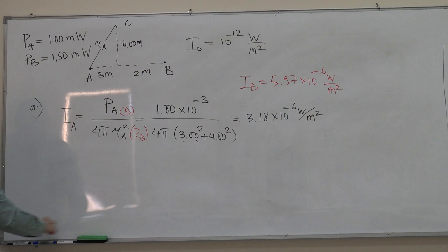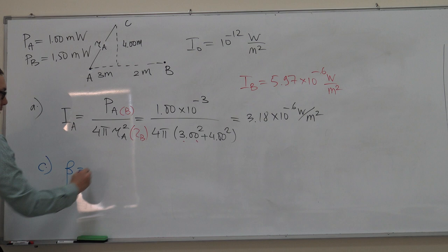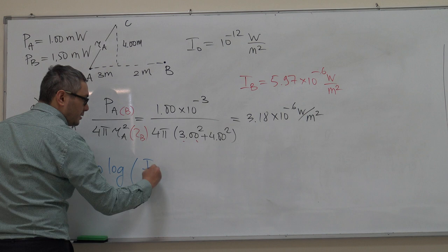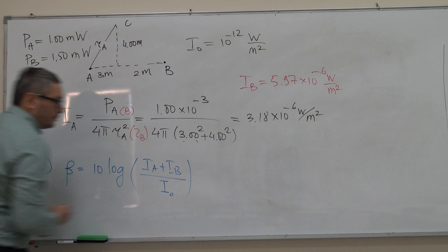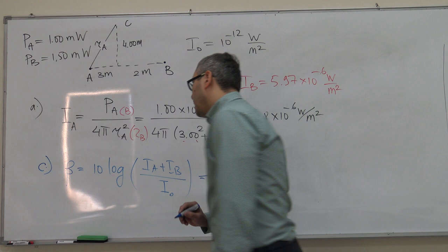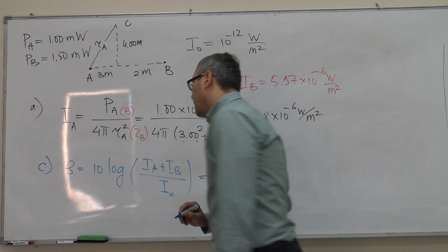For part C, loudness beta would be equal to 10 times log of the sum of the two intensities divided by I_0. Instead of adding the powers, we are adding the intensities. You can't add the powers. So this is then equal to 69.6 decibels, and that's it.